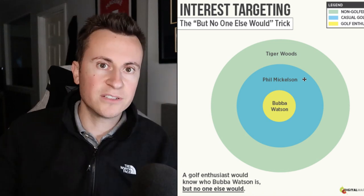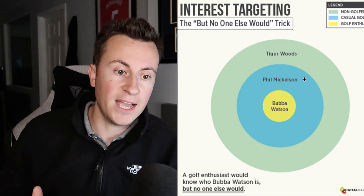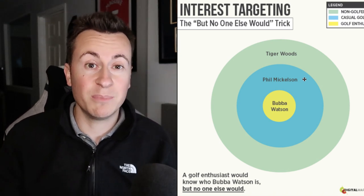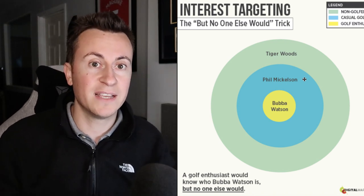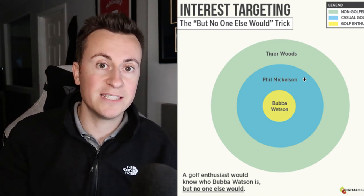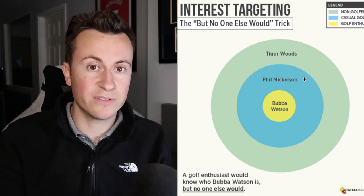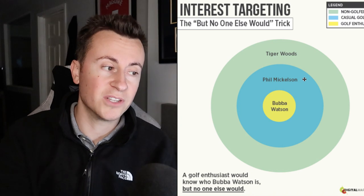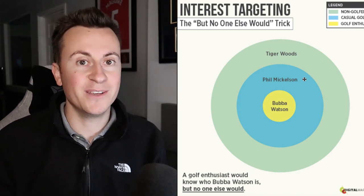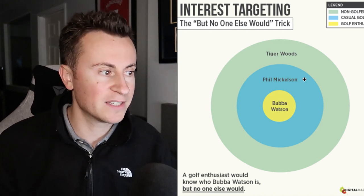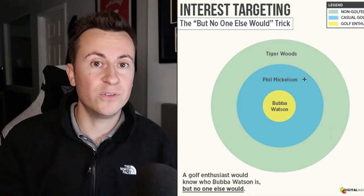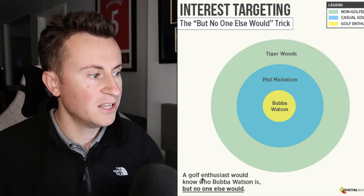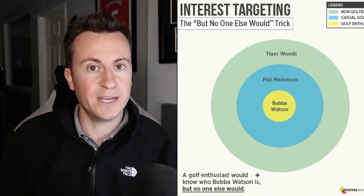Going one step more specific, you could target Phil Mickelson — Tiger Woods's biggest rival and still a very popular golfer, but most non-golfers won't know him. This means targeting Phil Mickelson reaches people who are genuinely interested in golf. You need a keen interest to know the less popular figures in a niche. In golf, that means interests like Bubba Watson, Ricky Fowler, Justin Thomas, or Will Zalatoris — if you don't play golf you probably don't know any of them, making them great interests to target.